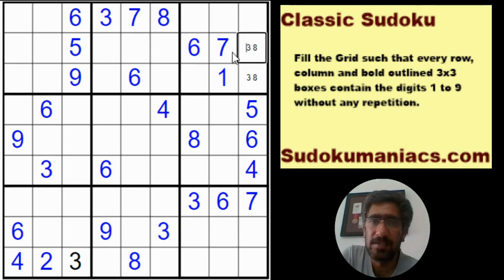It cannot be here, this has to be a 3. 8 also follows, so this becomes a pair of 3 and an 8. This 1-7 cannot be here, so the 1-7 forms a pair here. This has to be 2-3-9, so if 8 is here, 8 is here, 8 has to be in this.